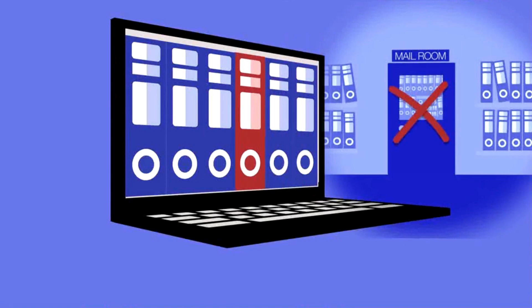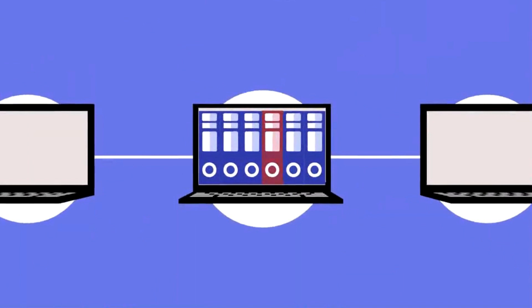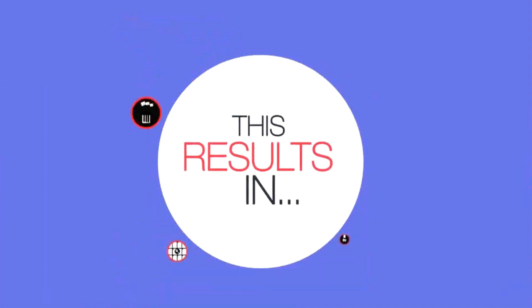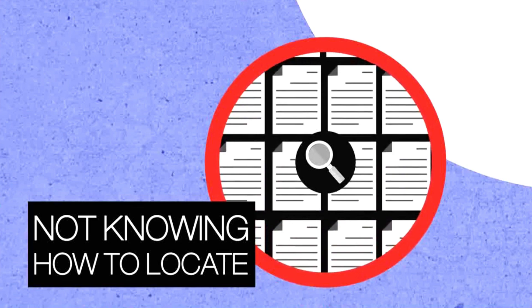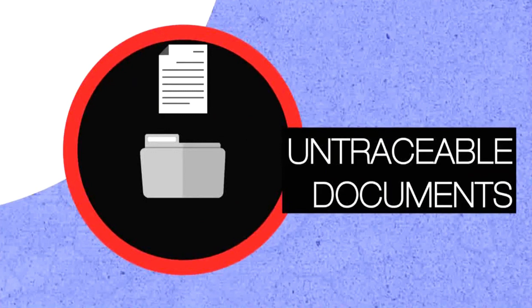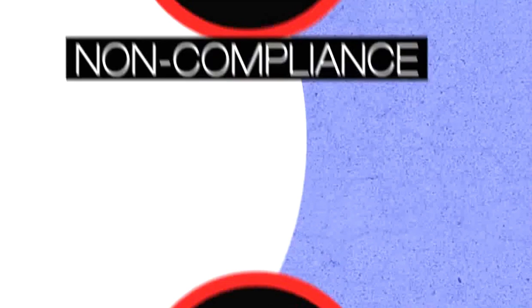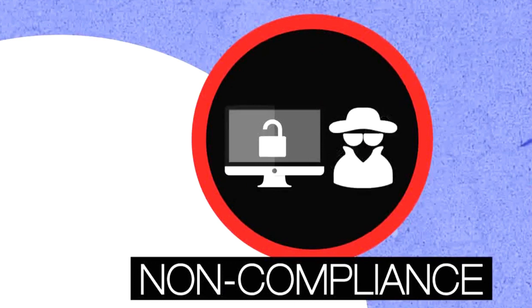Mail rooms no longer function because we have bypassed them. Thus, important documents are left to recipients to manage and file without proper tools. This results in deletion of important emails and documents, employees not knowing how to locate documents, or having no access to files because of organizational change or staff turnover. Documents are not traceable because each person files in their own way, leading to non-compliance with regulatory requirements and breaching security.